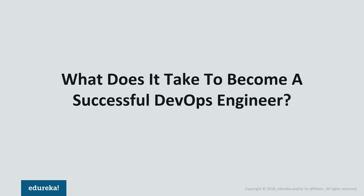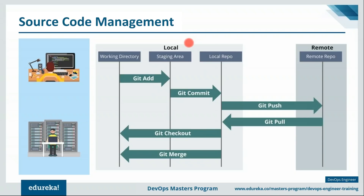For example, they have good hands-on knowledge of source code management tools like Git and how these SCM or version control tools work. They are fully aware of concepts like branching, and they know how to connect the source code repository with continuous integration tools like Jenkins in order to facilitate automation testing and deployment. Generally, distributed version control tools like Git are preferred over centralized version control systems.